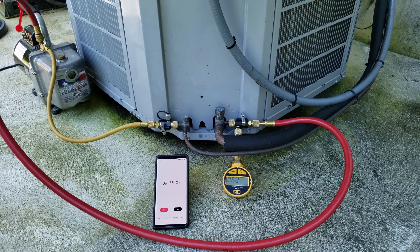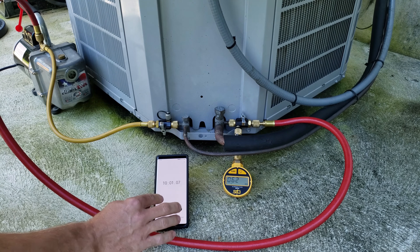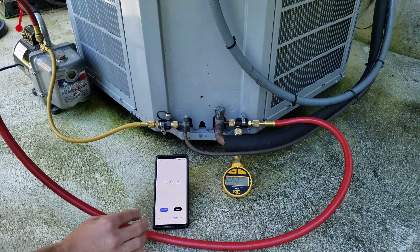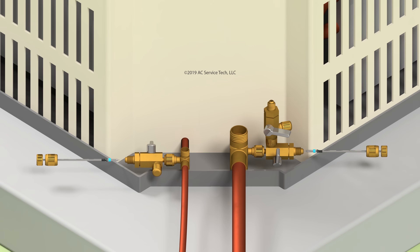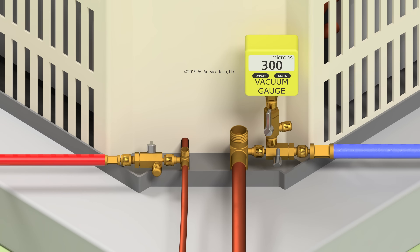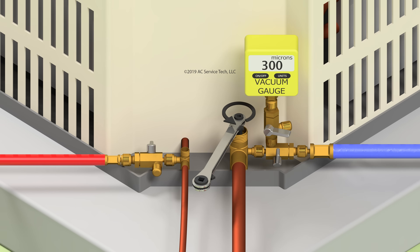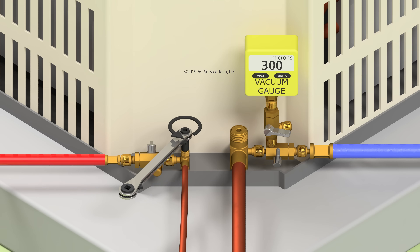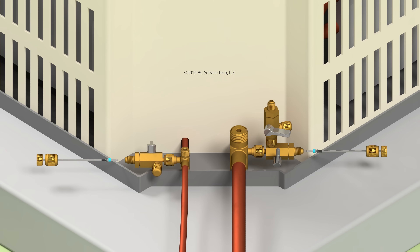One more thing I find a lot of people doing: after the vacuum and standing vacuum test, people are actually replacing the valve core before having a positive charge in the system. Don't do that. Make sure you put the valve cores in after breaking the vacuum with refrigerant. You can do that because you have the valve core removal tools attached to the ports — so you know for sure you still have a vacuum before you break it with refrigerant. If you don't do that, when you go to put those valve cores in, you're losing your vacuum and introducing humidity into that system.